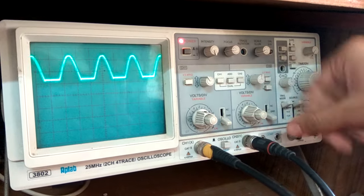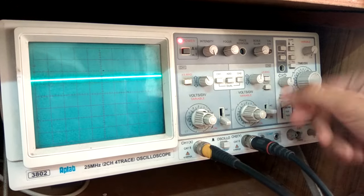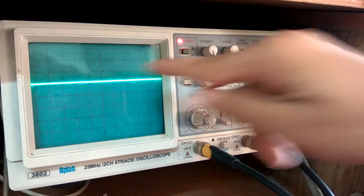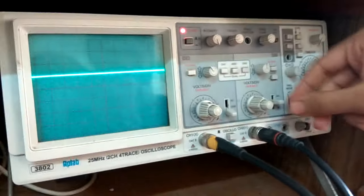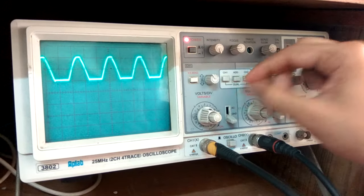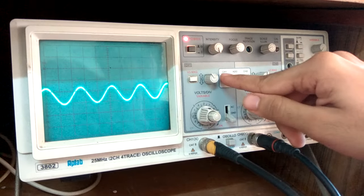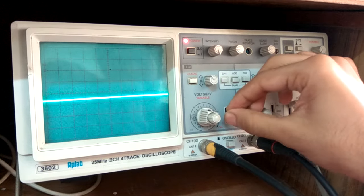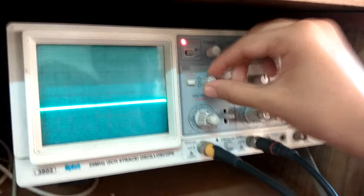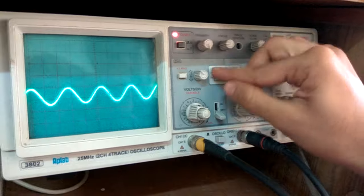You adjust the ground. That is turn this knob to ground, adjust it to this line. I am adjusting it to this line. And now I am putting it back to DC. Even in channel 2, I am going to channel 1, I am going to do the same thing. I am adjusting it to ground and then I am putting it back to DC.